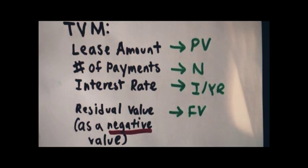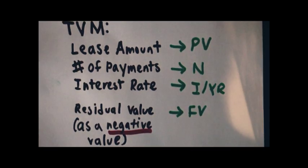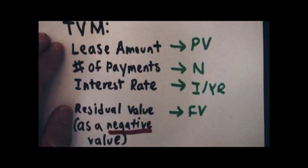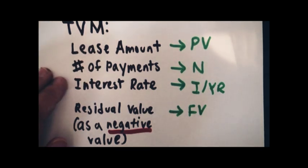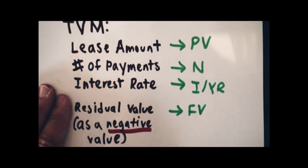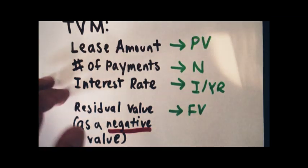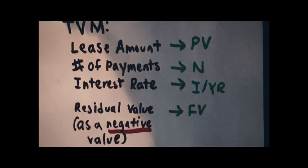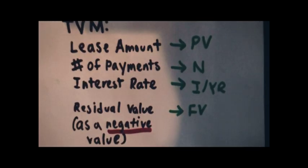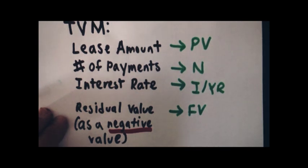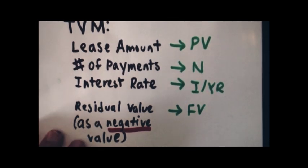This is your simple, normal lease. Using a calculator with a time value of money module, we're going to enter the lease amount into the PV, or present value, register; the number of payments into the N register; and the annual interest rate into the I/YR register. If you are working with a calculator with a periodic interest rate register, such as the Hewlett-Packard HP-12C, you'll use the periodic interest rate instead. The key point is that you enter the residual value as the future value, into the FV register, as a negative number.